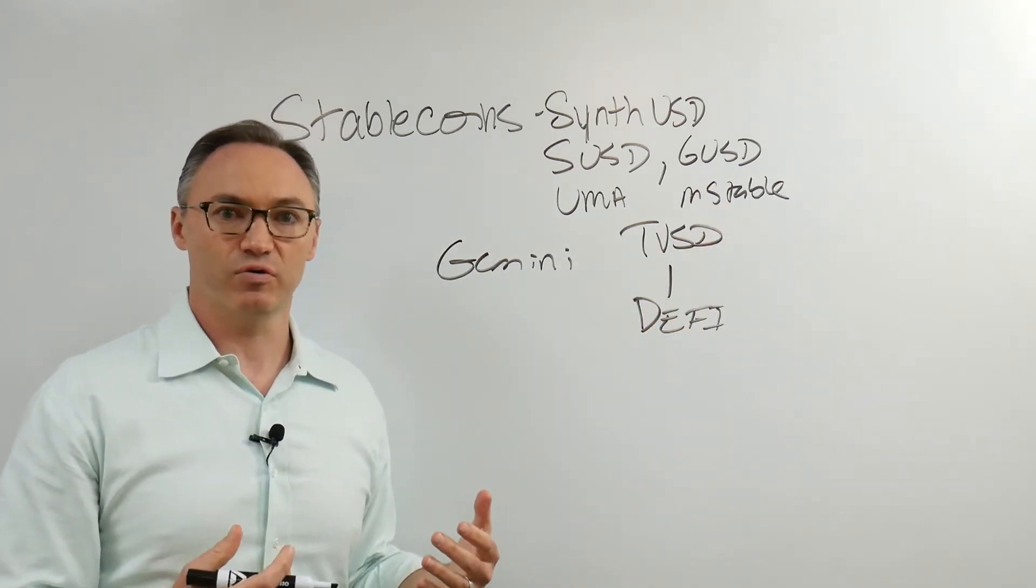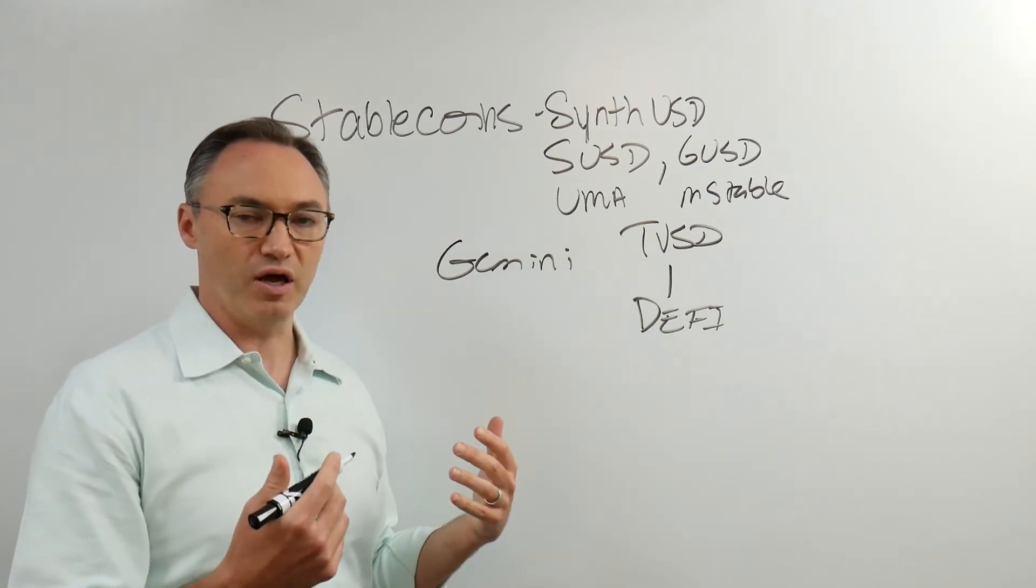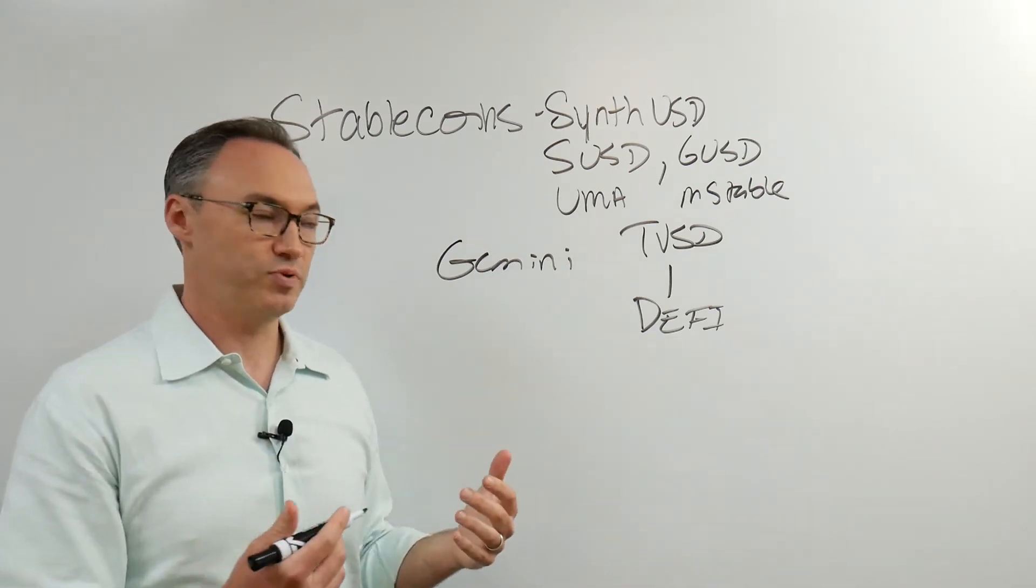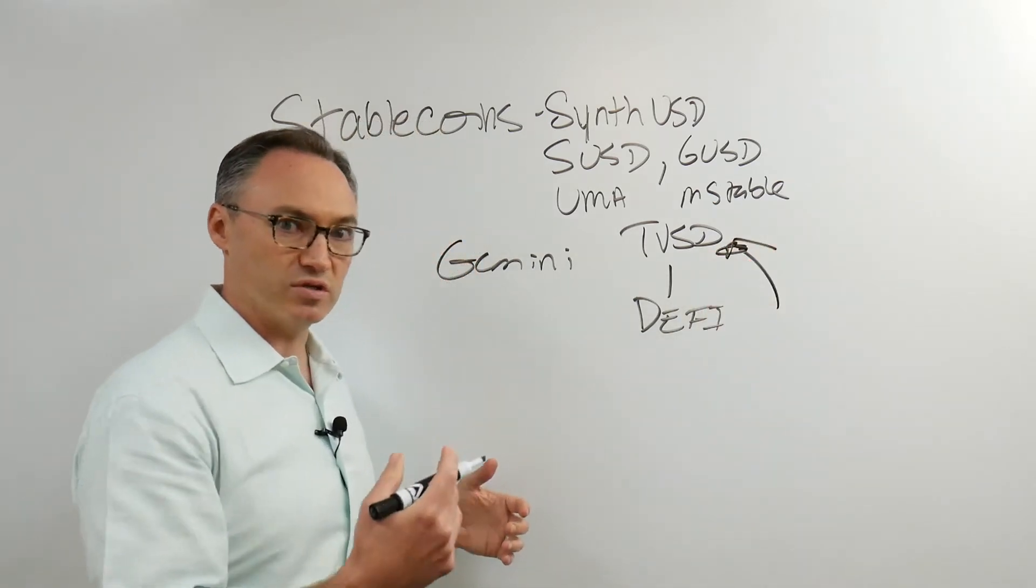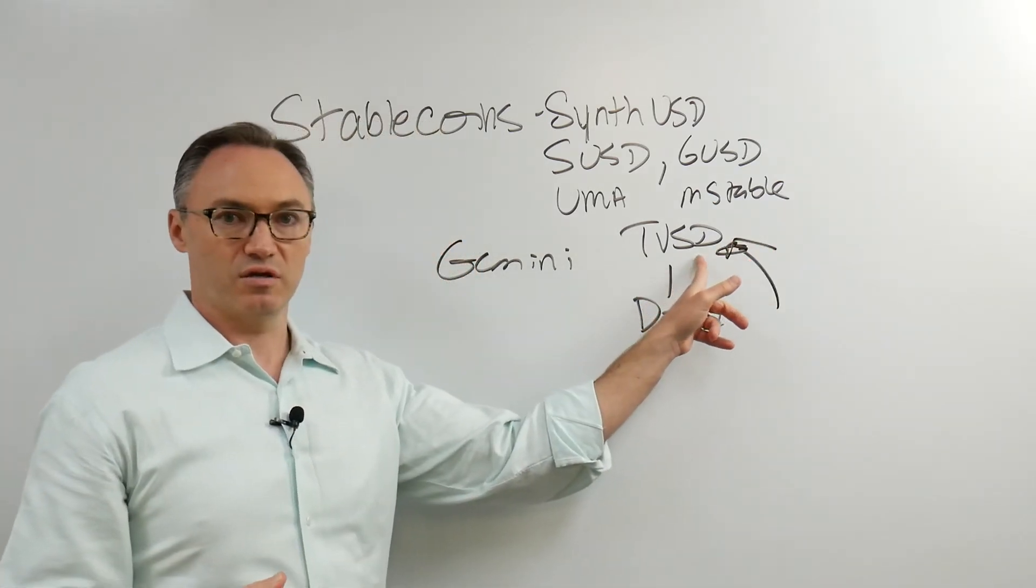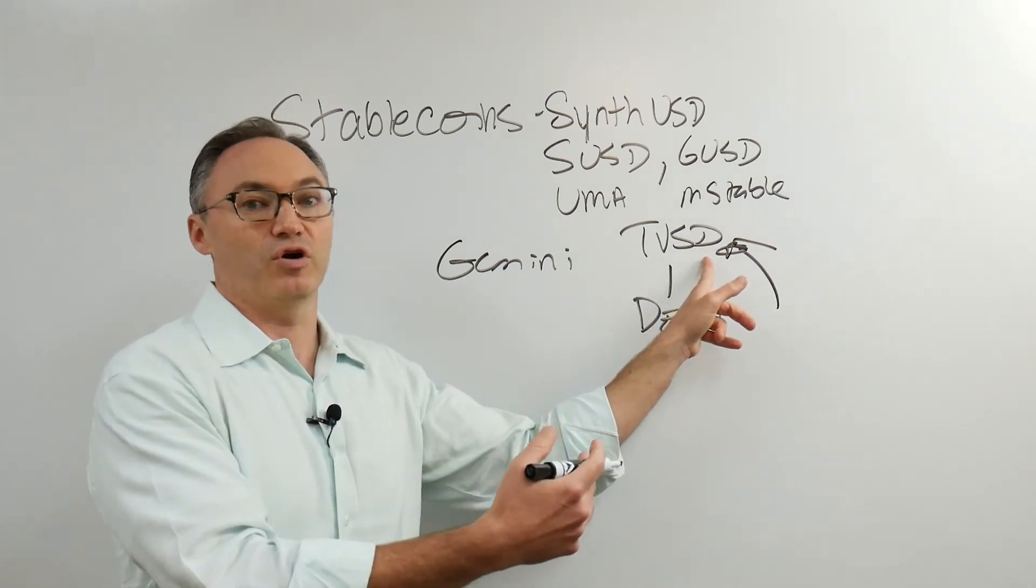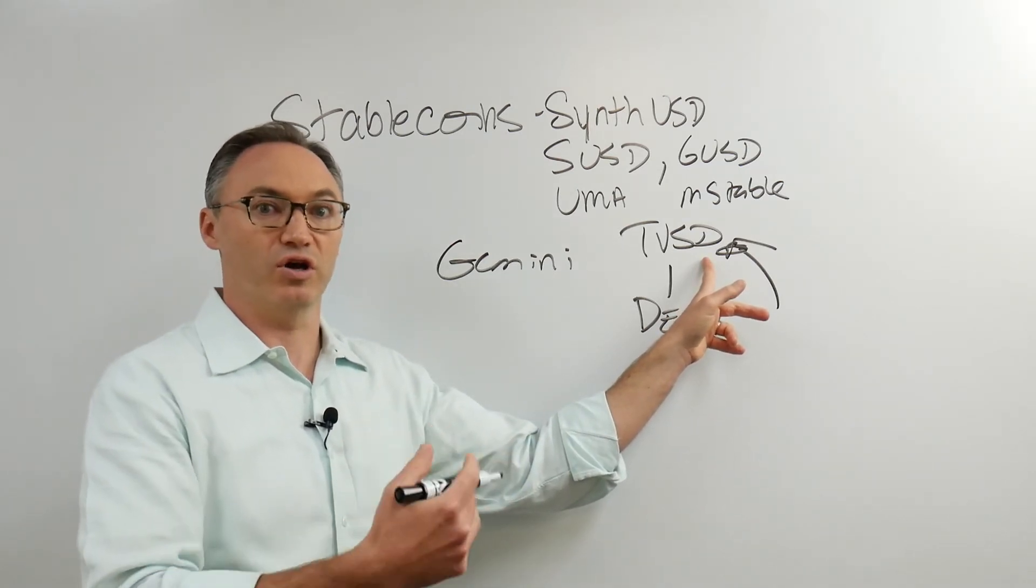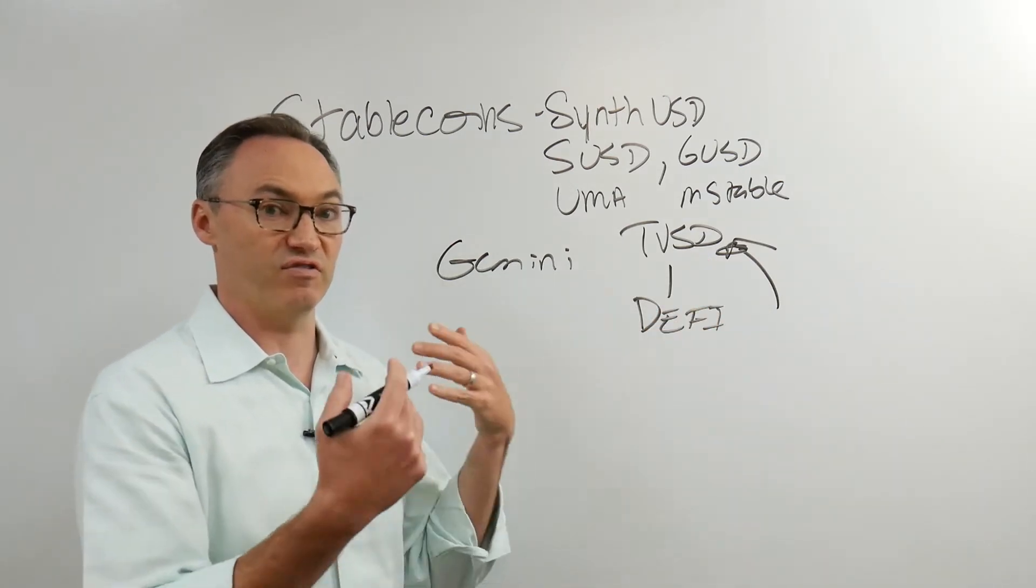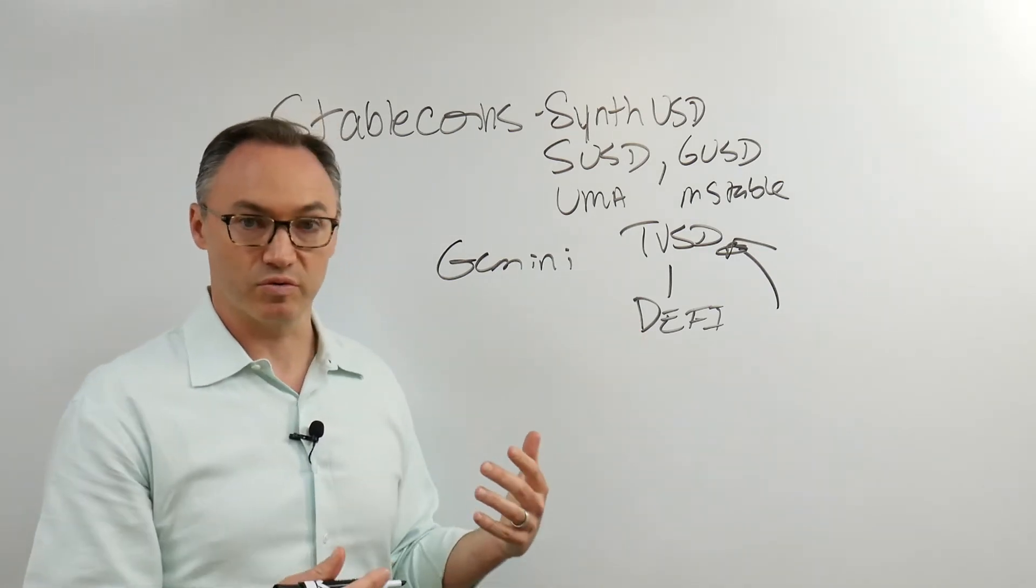If I have a security token on the Tezos blockchain, maybe it pays a distribution or dividend. Maybe it's a real estate token and it gets paid in Tether or in Tezos USD, in TUSD. Maybe I can then go exchange that for an actual dollar or exchange that for fiat currency, or I might want to buy other Tezos tokens.